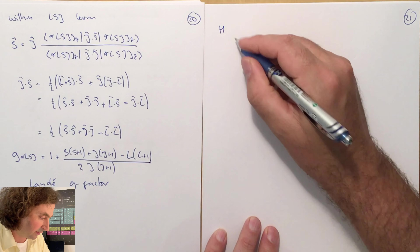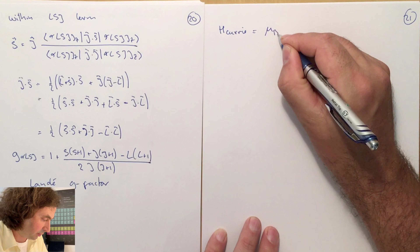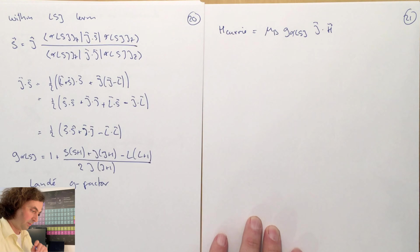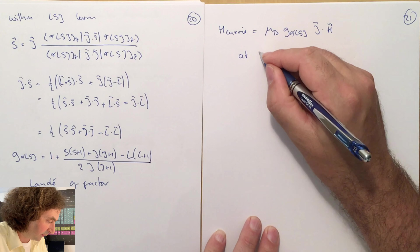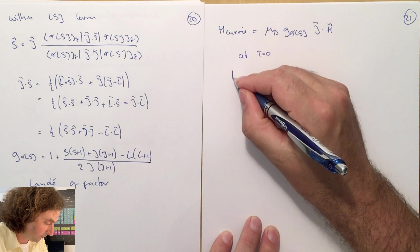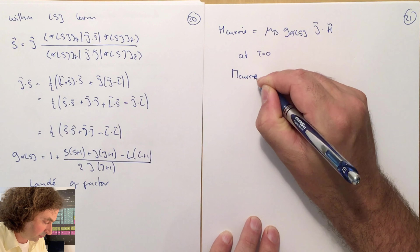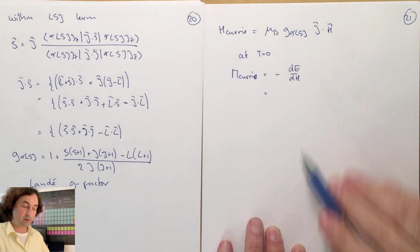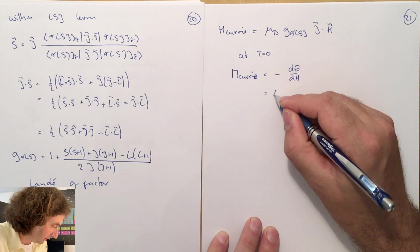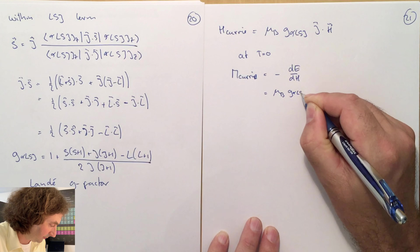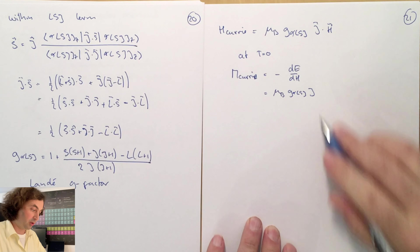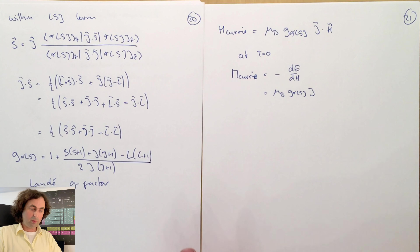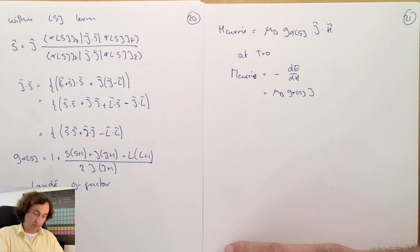So we find that the Curie Hamiltonian is mu_B times the G-factor alpha LS J times J·H. At low temperatures we can determine the magnetic moment — the Curie moment is minus dE/dH. The lowest state in your term has Jz equal to J, such that this is mu_B times the G-factor times J, because Jz equals J. What I've shown you is that we can use projections of operators on other operators that are easier to calculate, just as you can project states on a complete set of states.